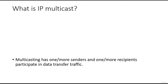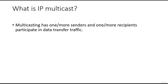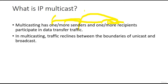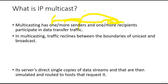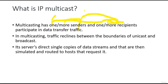What is IP multicast? Multicasting is the transfer of data traffic from one or more senders to one or more recipients. In multicasting, traffic remains between the boundaries of unicast and broadcast. It serves direct single copies of data streams that are then simulated and routed to hosts that requested them. IP multicast is a detailed concept — you can search online to learn more.